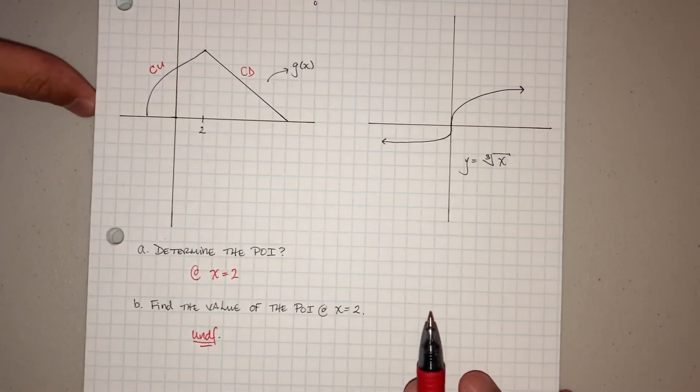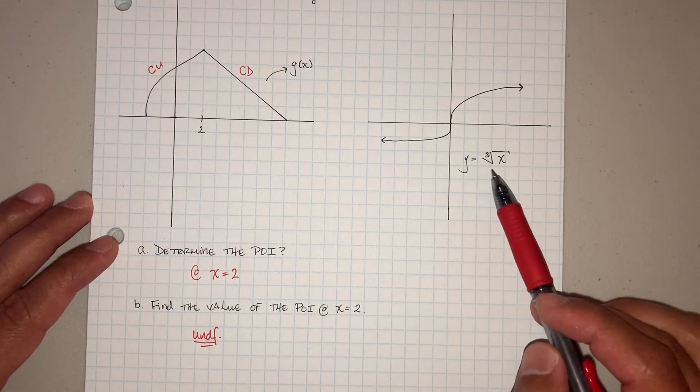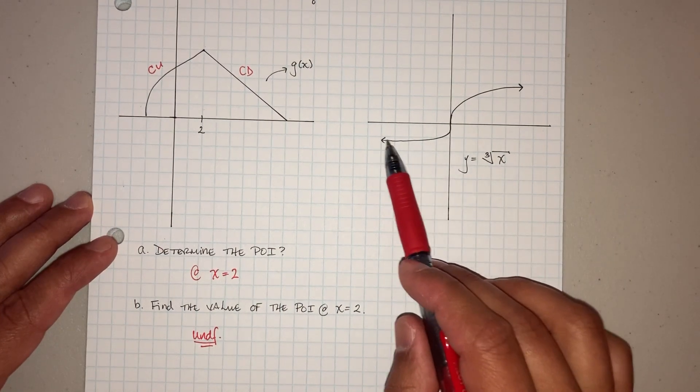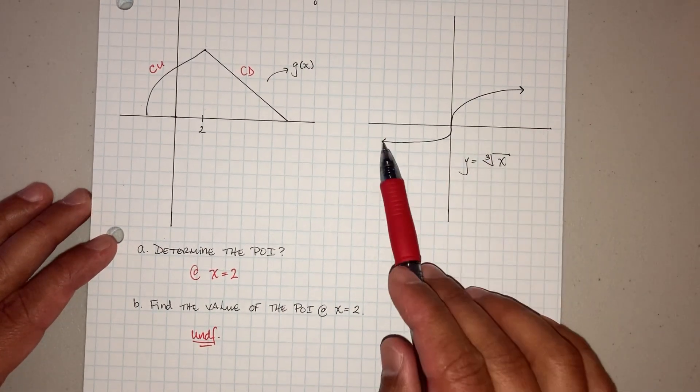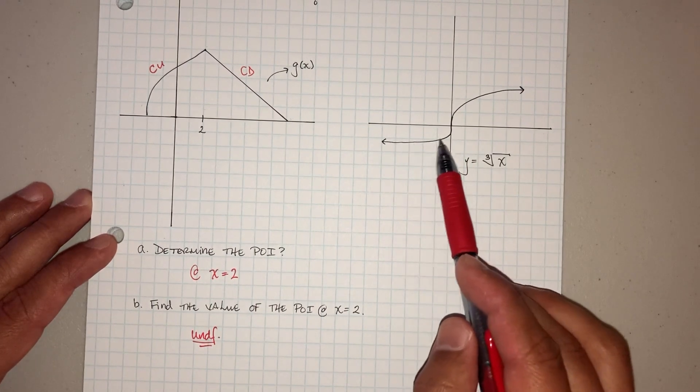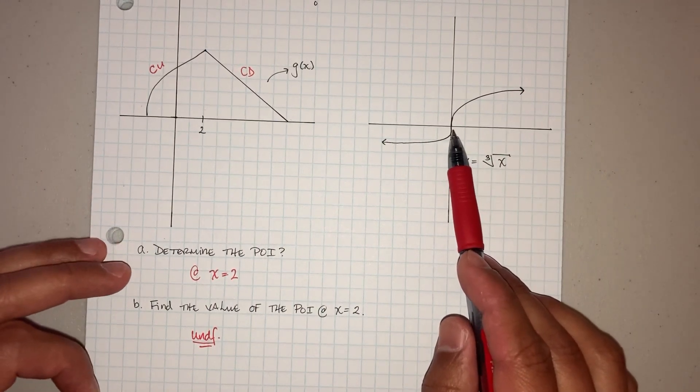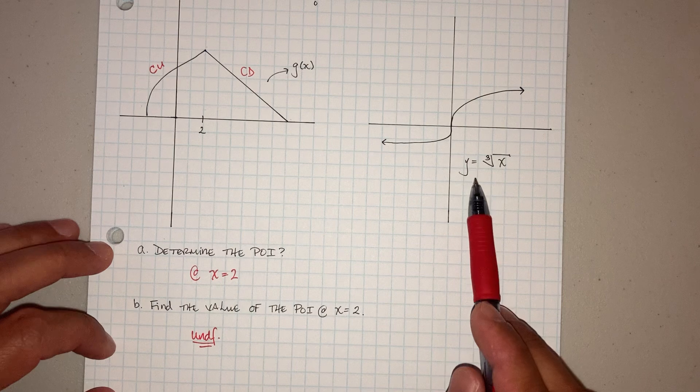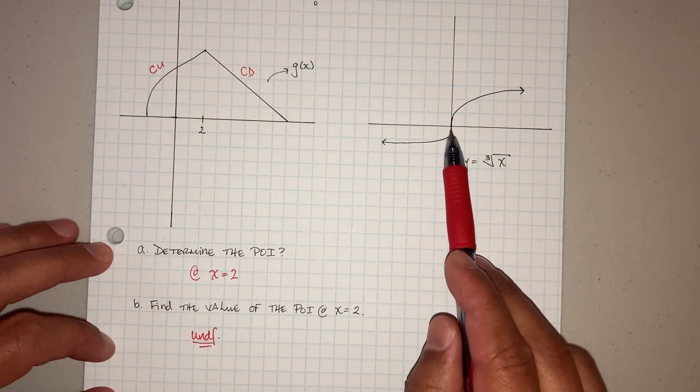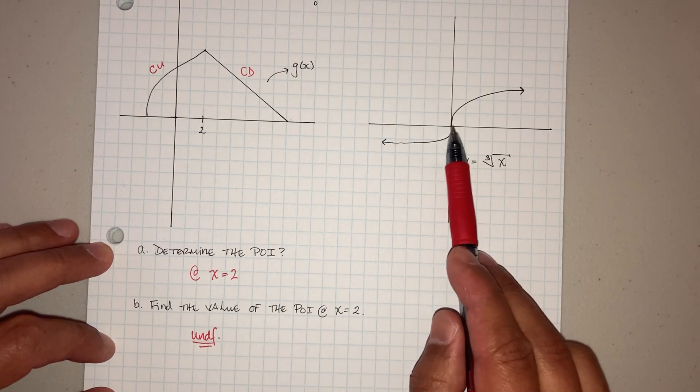Now, the other thing I tell my students, take a look at this. Look, this is the graph of the cube root of x, right? Notice how it goes. Is there a point of inflection at x equals 0? Yes, look. It goes from concave up and then it goes concave down. So there is a point of inflection. Definitely. Can you find the value of the point of inflection? No. Because you can't take the derivative of that at x equals 0.